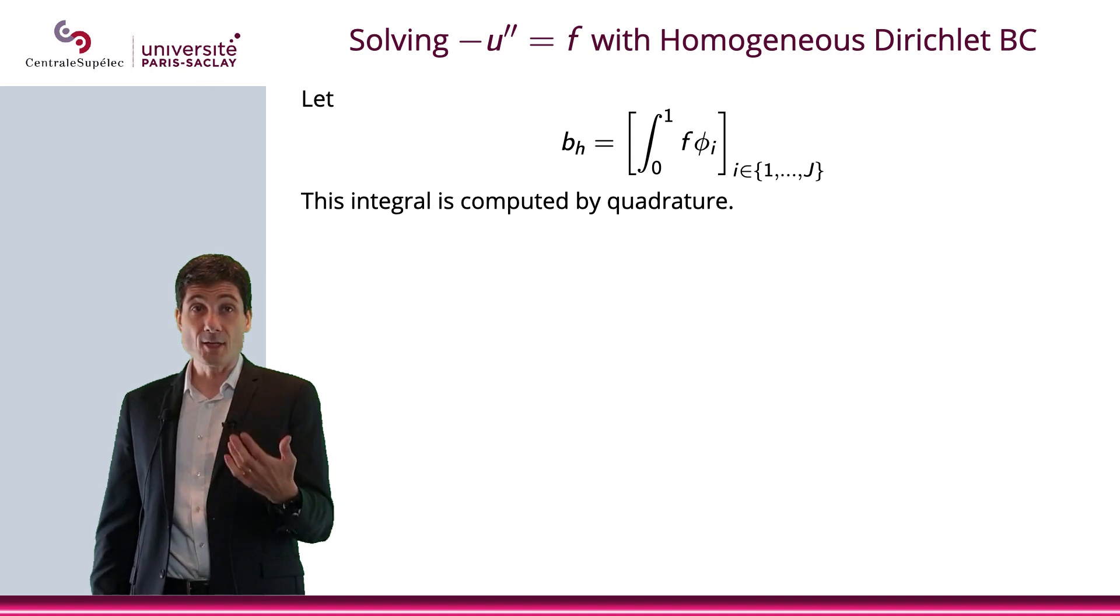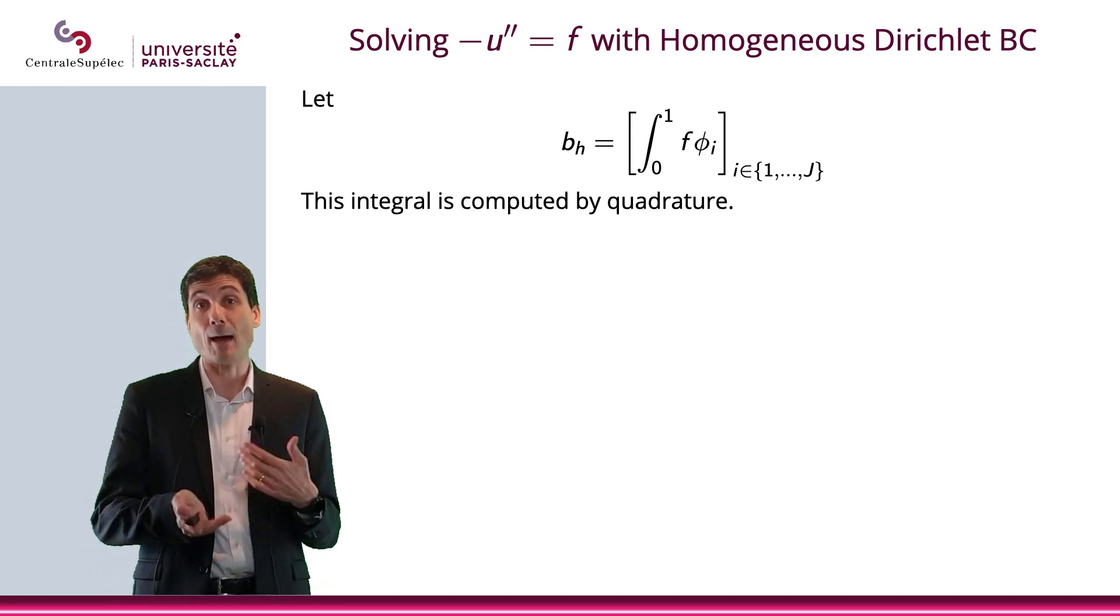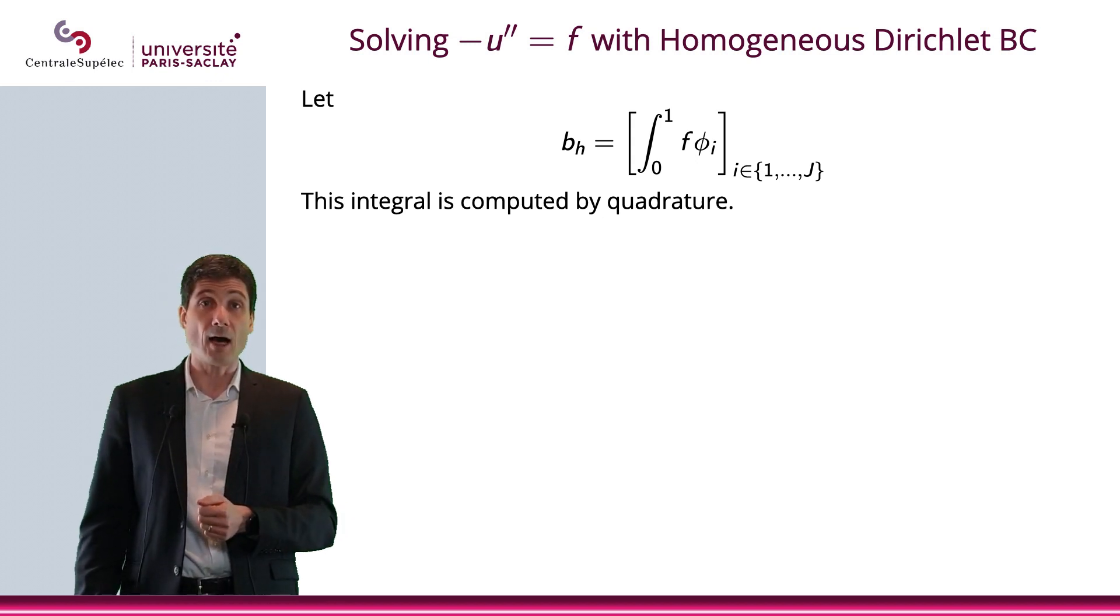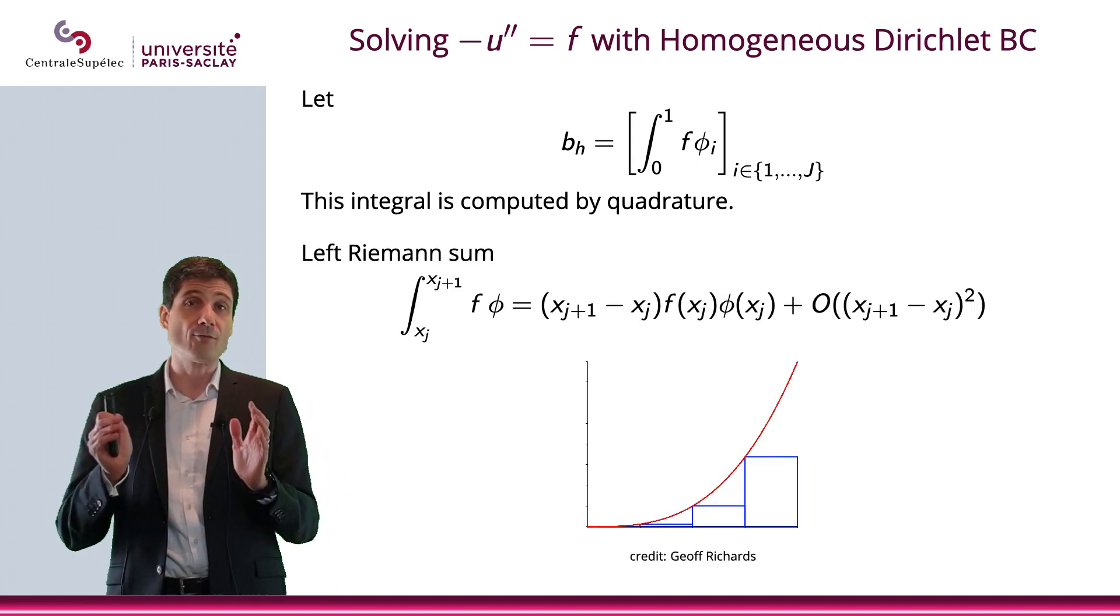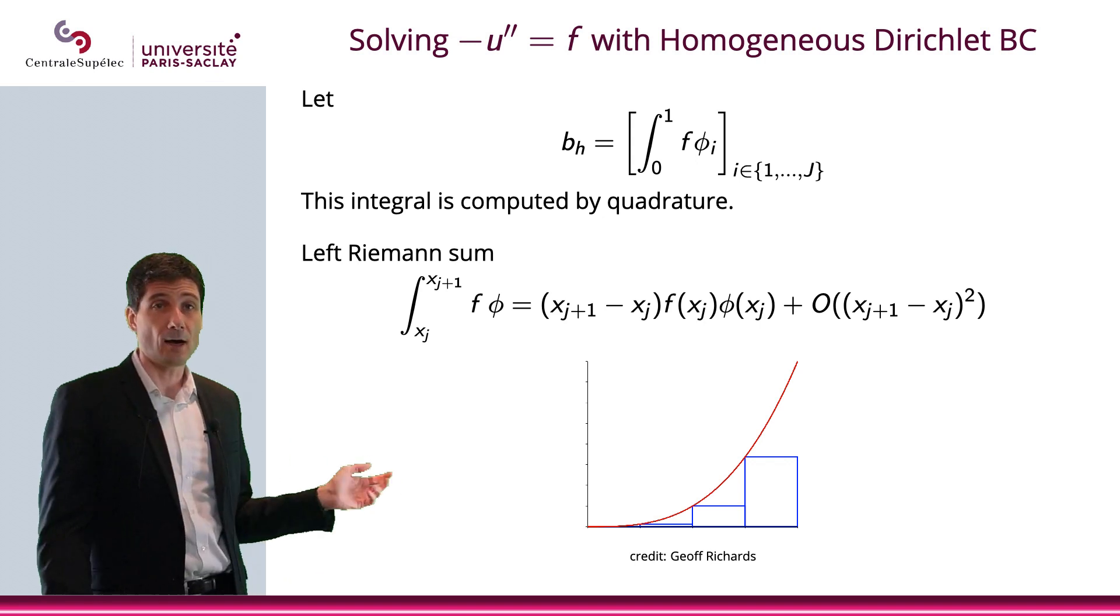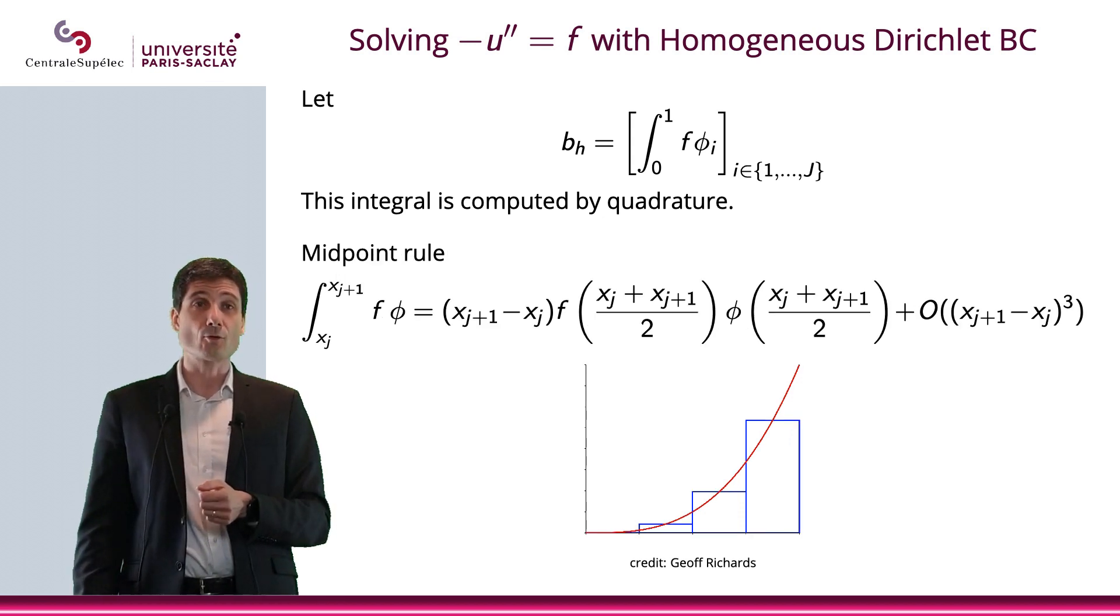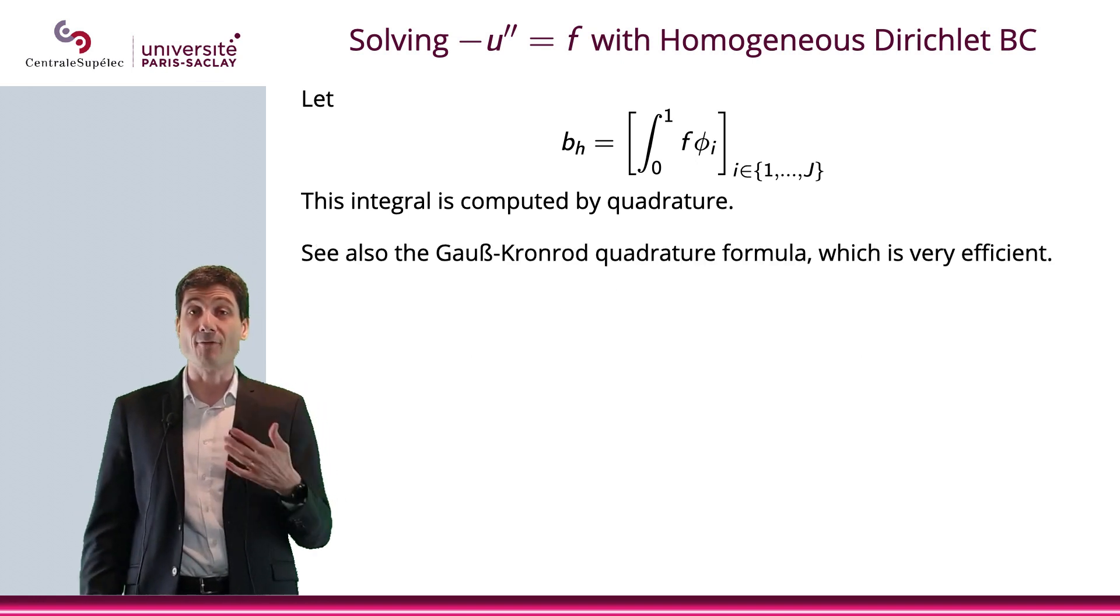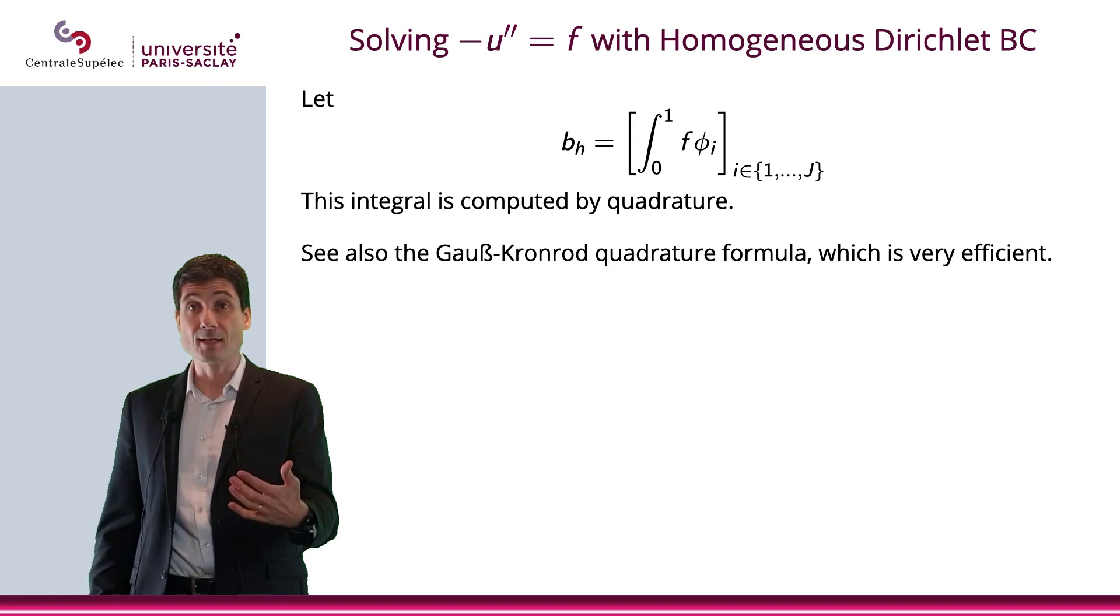Now, what about b_h? Well, b_h is the integral between 0 and 1 of f times φ_i. That can just be computed by approximation. There are a lot of numerical ways to integrate this function. Here are a few. You can basically do the Riemann sum. Here is the left Riemann sum that is written here. You can do the right Riemann sum. You can do the midpoint rule. You can do the trapezoid rule. You can do the Simpson rule. You can do the Gauss-Kronrod, which is actually a very efficient method to compute this b_h. But that's not a problem. You can actually approximate this integral pretty easily.